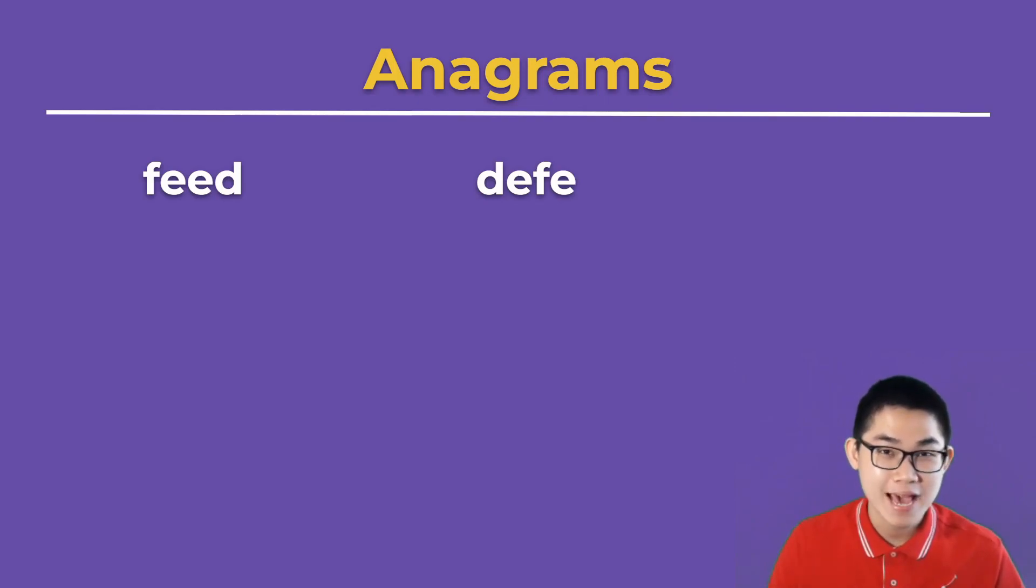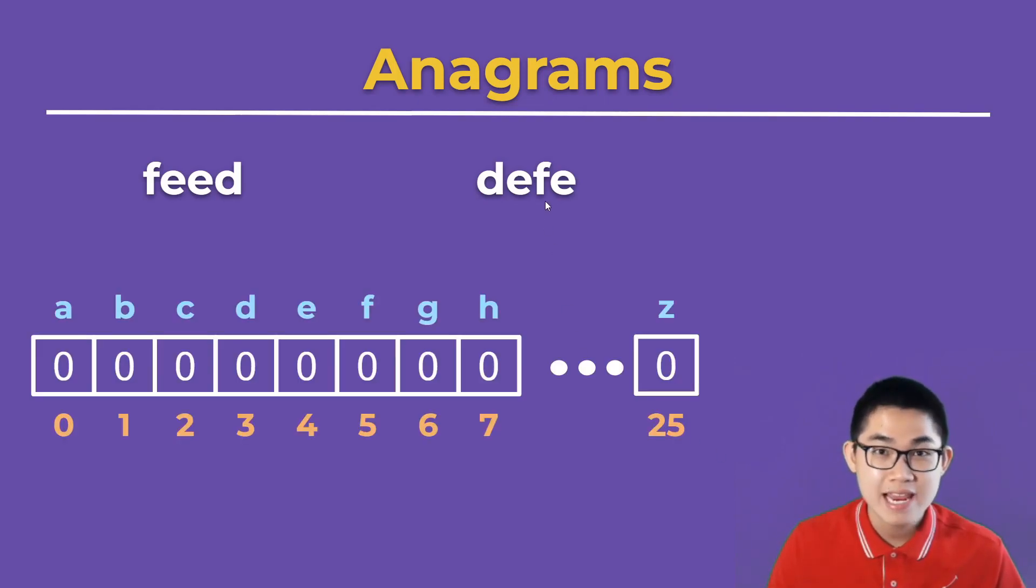Well, here it is. Let's say we have feed and defy. We then create an array of size 26 and fill this array with zeros initially. Let's say index 0 is for A, index 1 is for B, and so on.